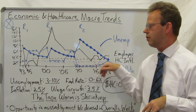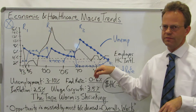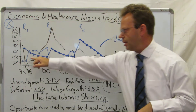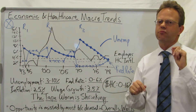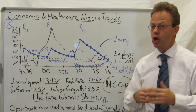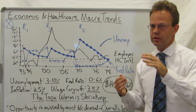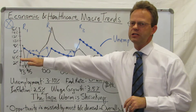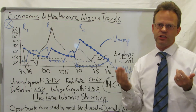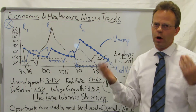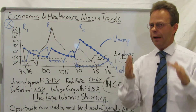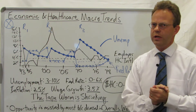Inflation even dropped to zero a couple of times in 2009 and 2015, but it's been incredibly stable. Interestingly, the black line just above it is wage growth — real wages have grown about one percentage point above inflation almost every year, so wage growth is at about 3.5%. You can think of that as everyone in America on average getting about a one percent raise every year.